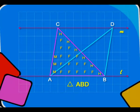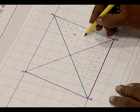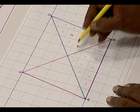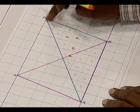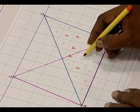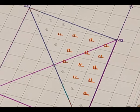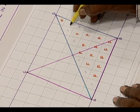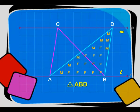Similarly, we mark the squares on triangle ABD. Here you can see the fully covered squares marked as F. We concentrate only on triangle ABD. Then we find the squares which are covered more than half, marked as M. The remaining squares that are less than half are ignored.